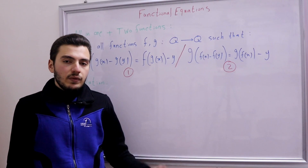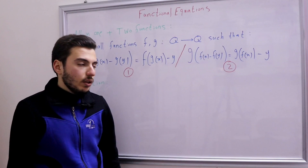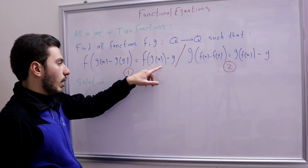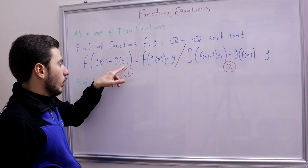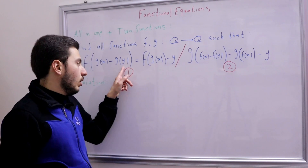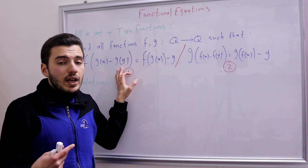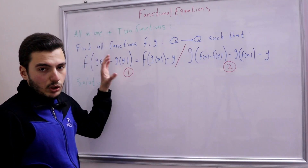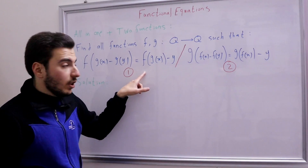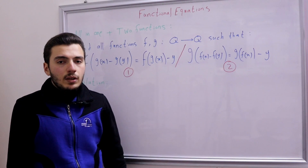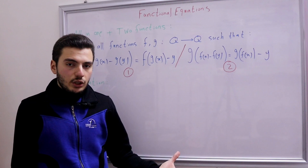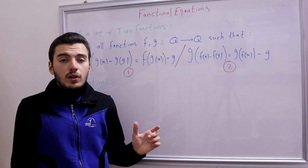Now can we show f is injective? Assume g(a) = g(b) with a ≠ b. We substitute P(x,a) and P(x,b) — the left-hand sides are the same since g(a) = g(b), and the right-hand sides give us −a and −b respectively. So a must equal b, a contradiction. Therefore g is injective, and by symmetry f is injective as well.